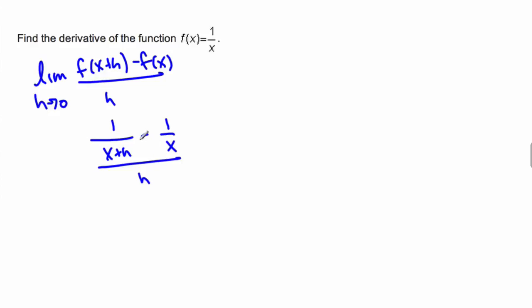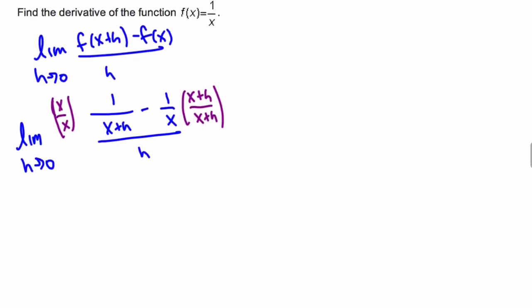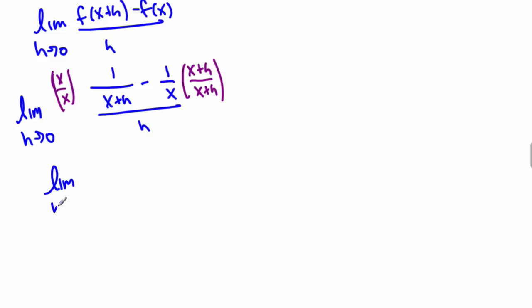I suggest you do a common denominator here, so let's go ahead and do x over x, and x plus h over x plus h. Don't forget your limit, doesn't mean anything without it. Okay, and so we'll get x minus x minus h all over x squared plus xh, all over h.